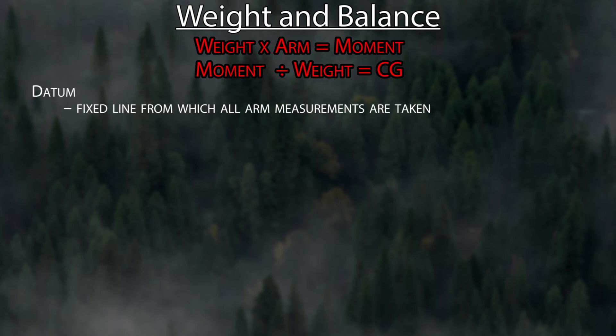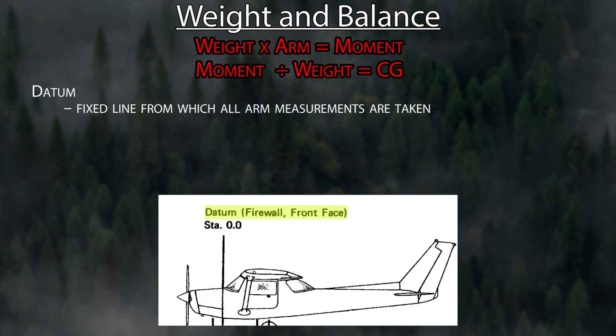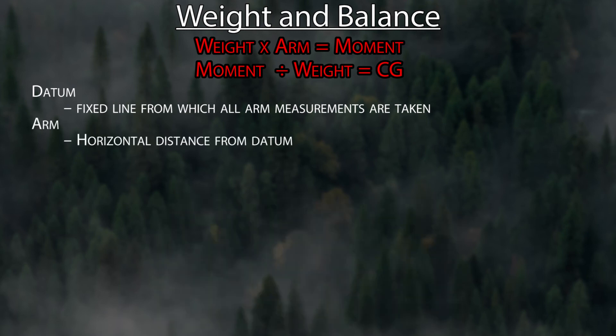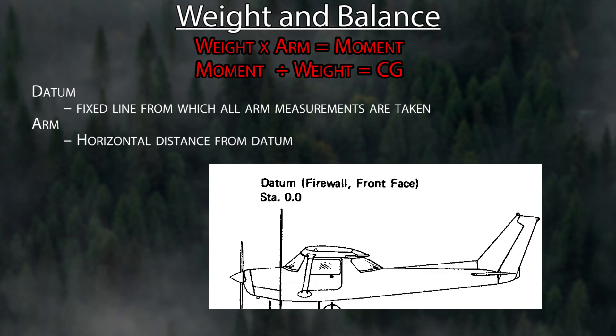In the Cessna, it's the engine firewall — that's your reference line or your datum. Your arm is the distance away from the datum that something is. If you're sitting 36 inches behind the firewall, your arm is 36 inches.